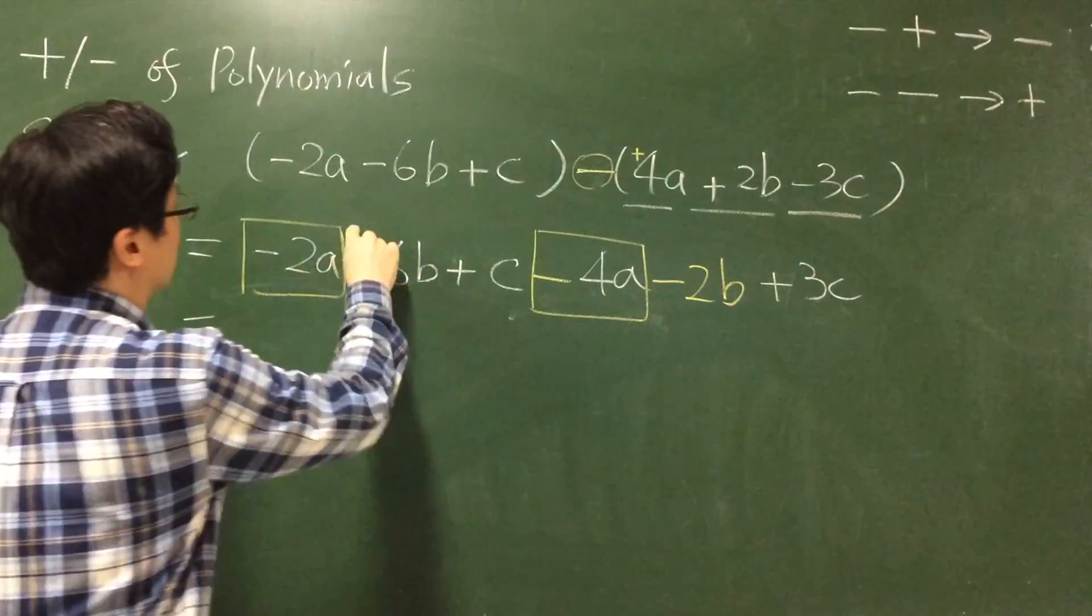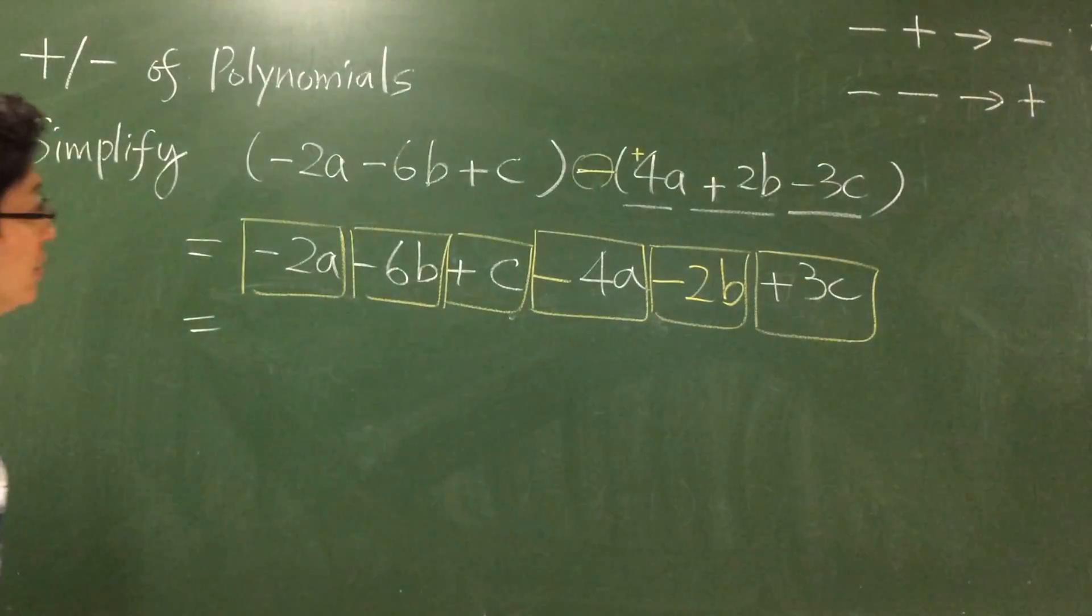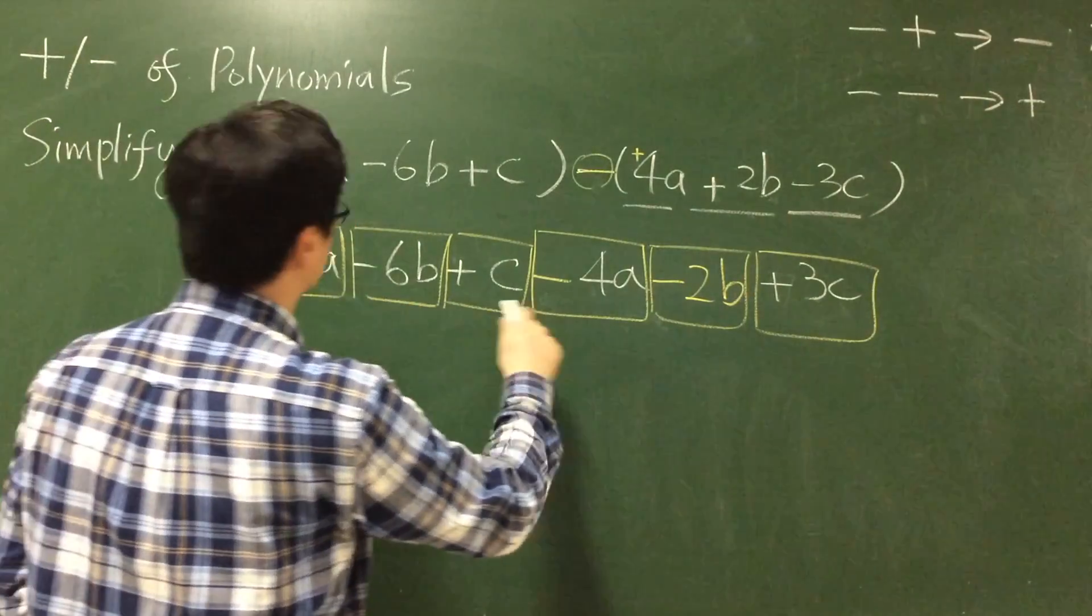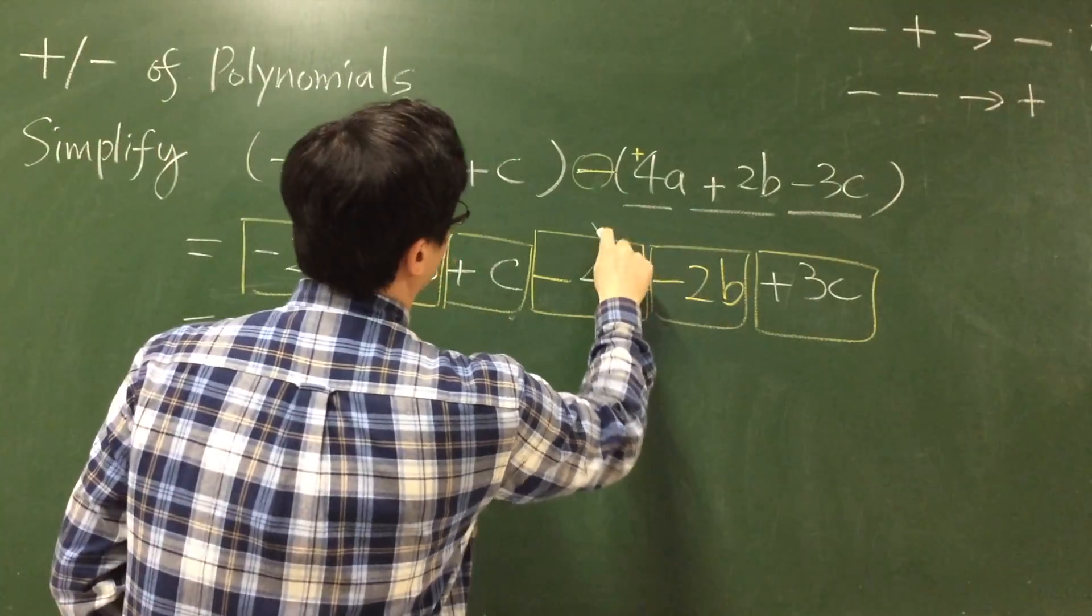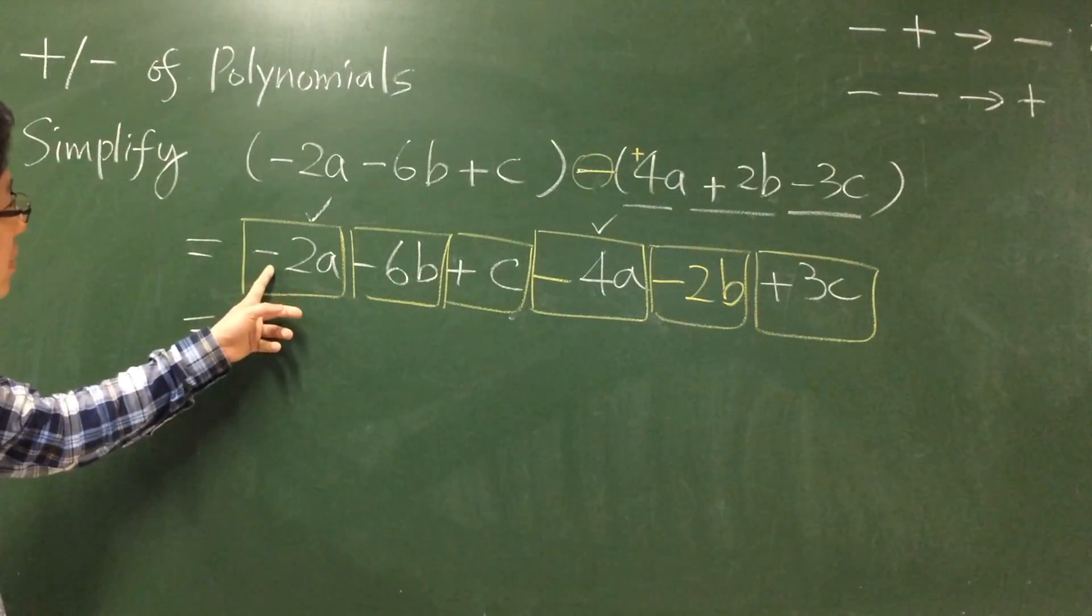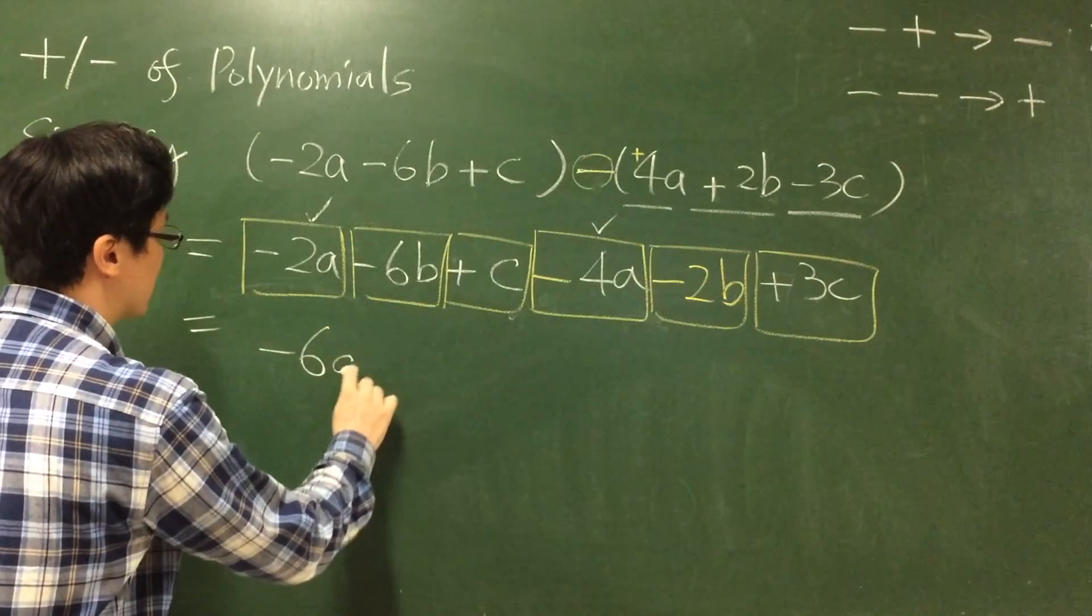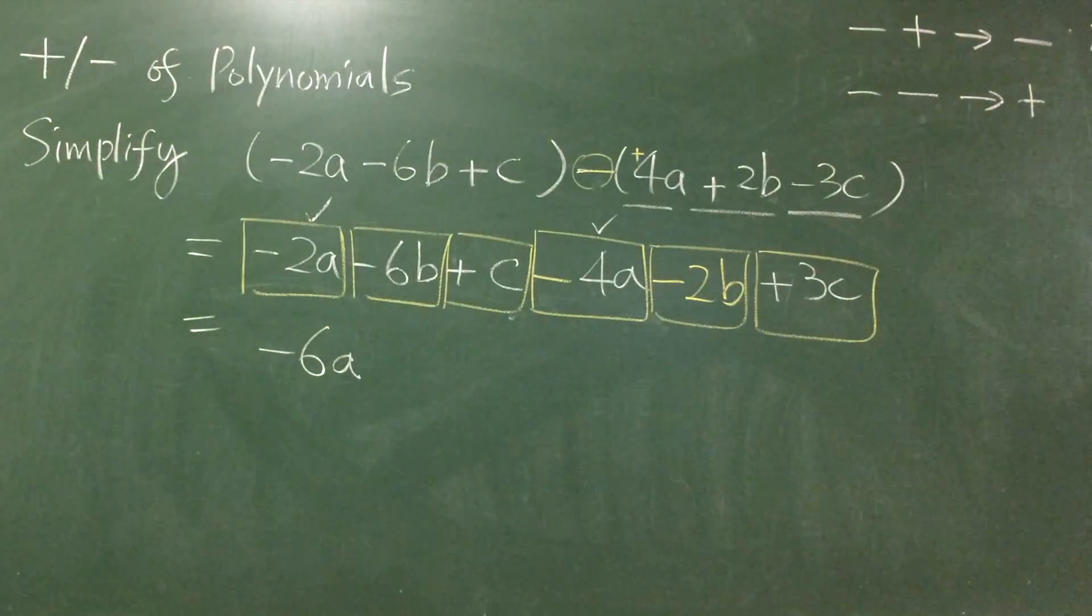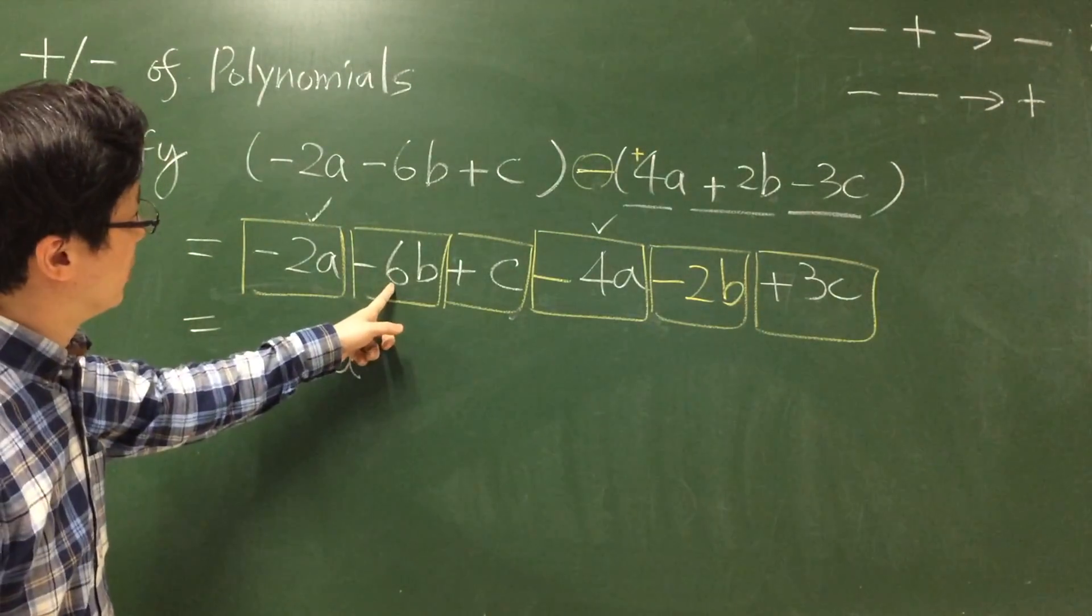Then we arrange terms into groups of like terms. So we have a total of six terms here and we can find the like terms minus 2a minus 4a, and we can simplify this in our mind minus 2 minus 4, we get minus 6a.